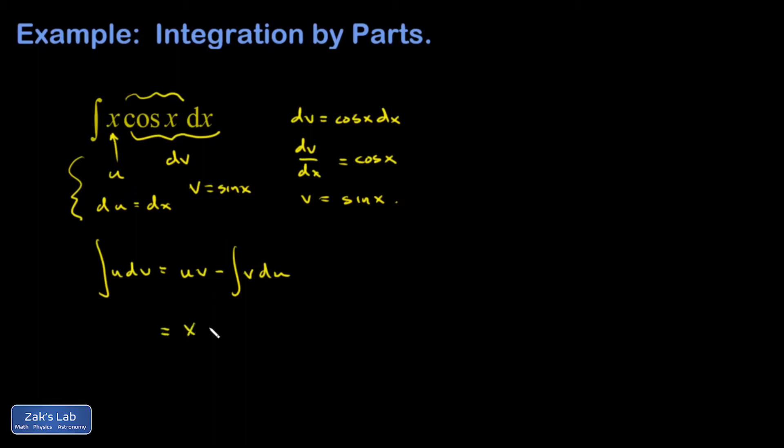so x sine x minus the integral of v du, so sine x. That's v, and then du is just dx.